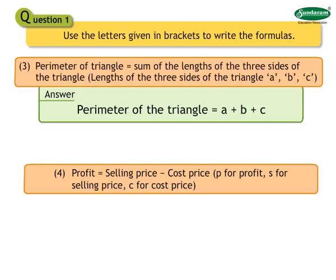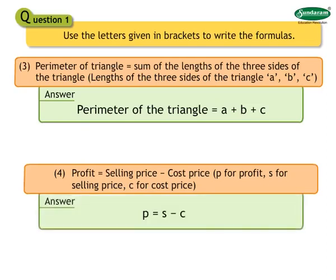Number 4: Profit equals to selling price minus cost price. Use P for profit, S for selling price, C for cost price. Answer: P equals to S minus C.